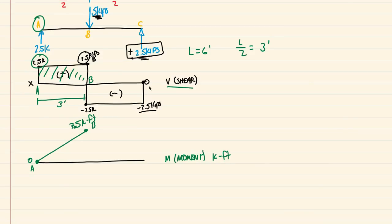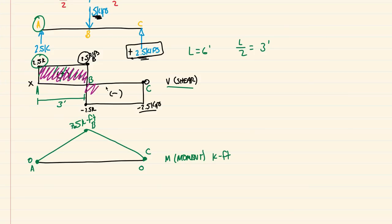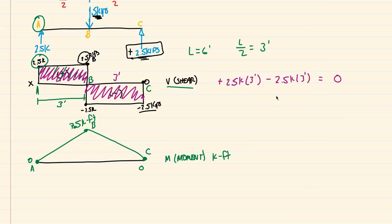Between points B and C the shear is negative, so the slope of the moment diagram is negative — it decreases back down to 0 at point C. We can verify this graphically: the total area under the shear diagram from A to C should be zero. The positive area is 2.5 kips × 3 feet, and the negative area is negative 2.5 kips × 3 feet, which sum to zero. This confirms the moment at C is 0.